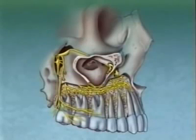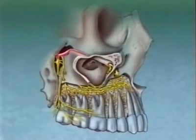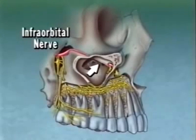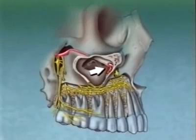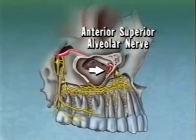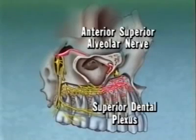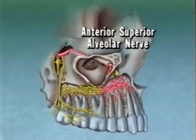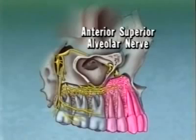The maxillary nerve trunk becomes the infraorbital nerve once it crosses the inferior orbital fissure to travel within the infraorbital groove and canal. During its course, the anterior superior alveolar nerve is given off. After contributing to the superior dental plexus, it provides pulpal innervation to the incisors, canine, and often premolars, their periodontium and facial gingiva, and the anterior portion of the antrum and floor of the nasal cavity.